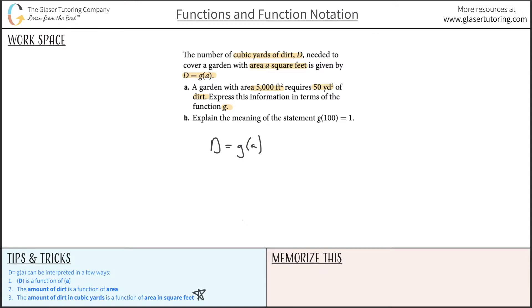Now all we need to do - remember the units for dirt are cubic yards and the units for area are square feet. In letter a they said a garden has an area of 5,000 square feet and requires 50 cubic yards of dirt. Basically all we need to do is make sure we have the appropriate units, which we do, and then we can simply plug in these numbers into our equation.